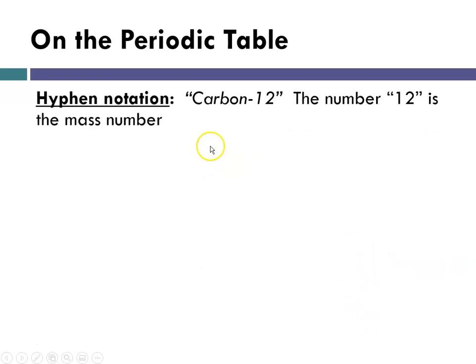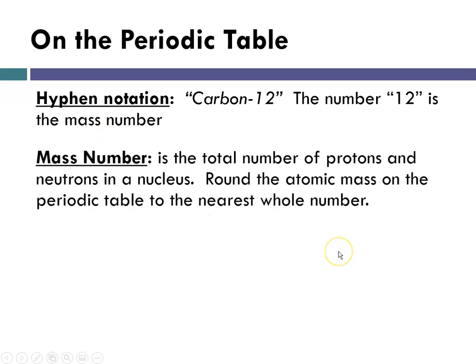On the periodic table we also get something called hyphen notation, and hyphen notation gives you the mass number. For instance, carbon-12 — the number 12 is telling us we're talking about carbon with a mass number of 12. The mass number is the total number of protons and neutrons in a nucleus. Protons have a mass of 1 AMU, neutrons also have a mass of 1 AMU, and electrons have a mass of essentially 0. So the mass of an atom comes from the protons and the neutrons, and the mass number rounded to a whole number tells you the total count of protons and neutrons in a nucleus.